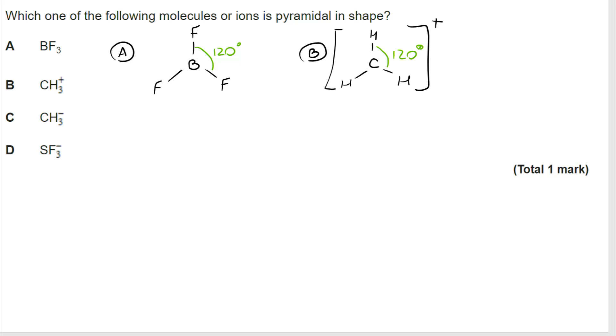For B, CH3+. Well, carbon has four electrons in its outer shell. The positive means we take that down to three. It's lost an electron. So we once again have three bonding pairs, no lone pairs. So the bond angle is 120, trigonal planar, not pyramidal.